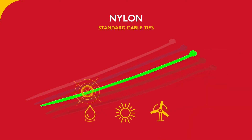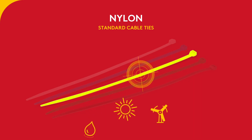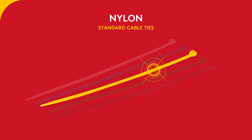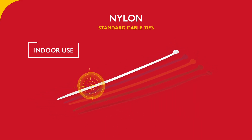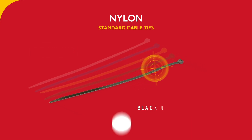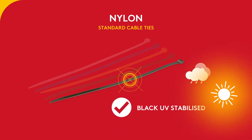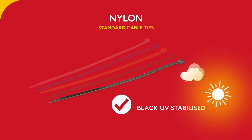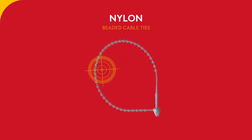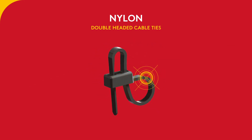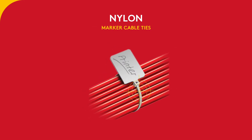The cable tie manufacturing process can produce UV stabilized ties for outdoor use. For example, you can have the same cable tie but manufactured for different applications — natural color cable ties are designed for indoor use, while black UV stabilized cable ties are best used outdoors. More examples include beaded cable ties, double-headed cable ties, and marker cable ties.